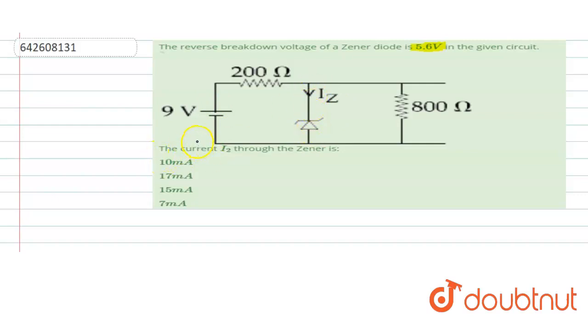So that means if you are taking this point as at 0 V, this will be at 9 V, and this will also be at 0 V.